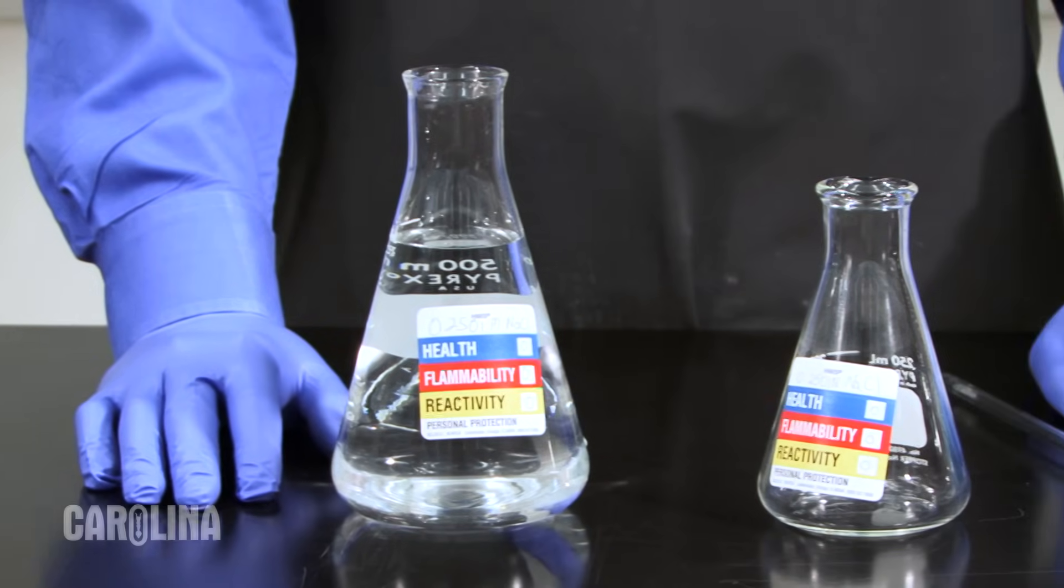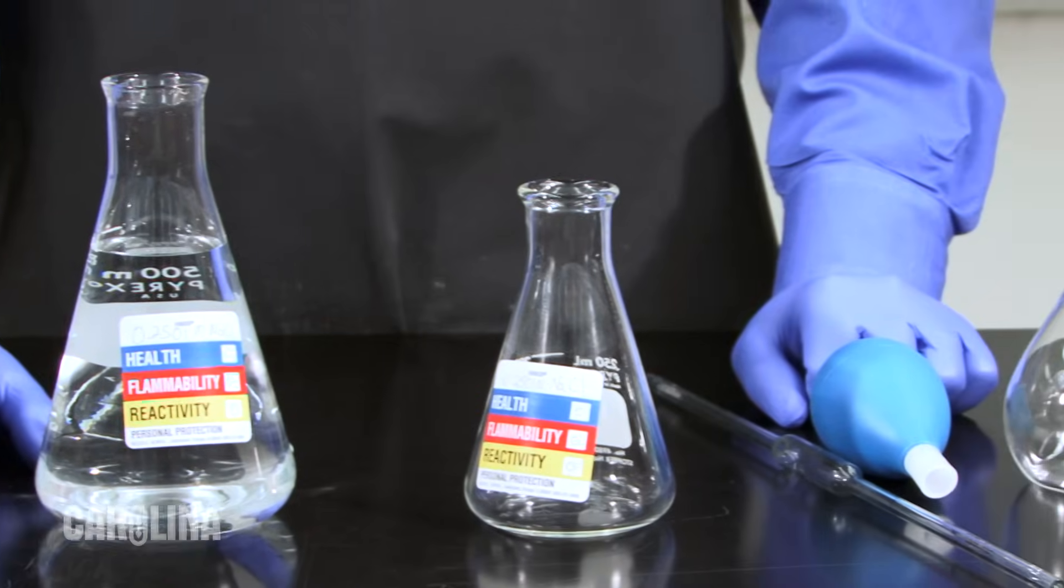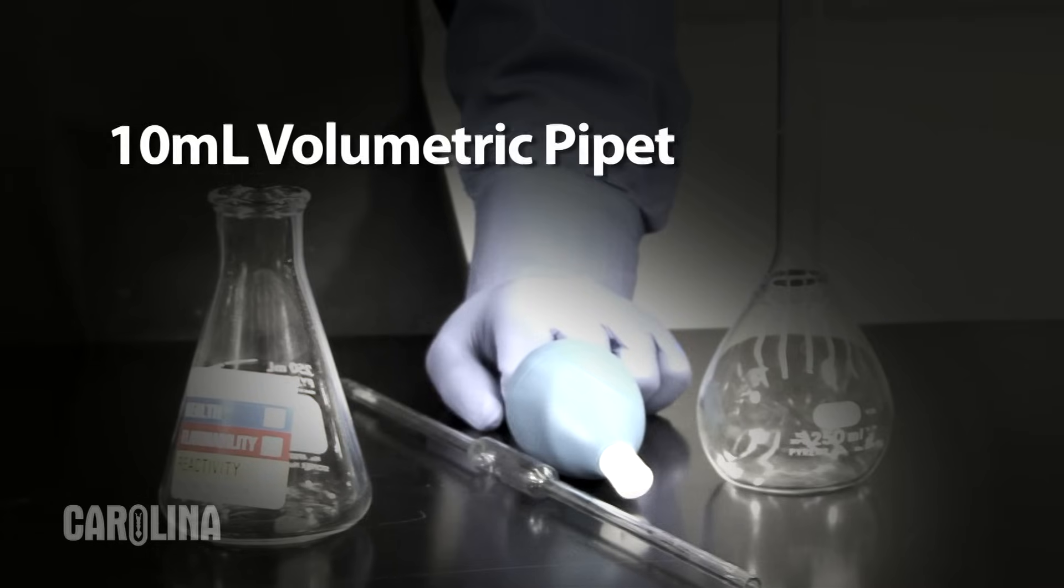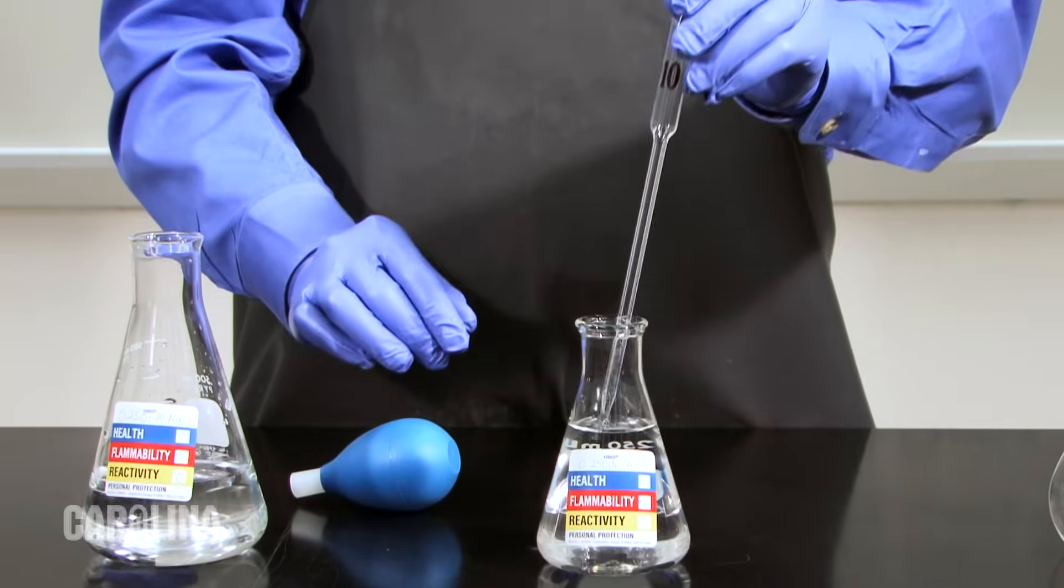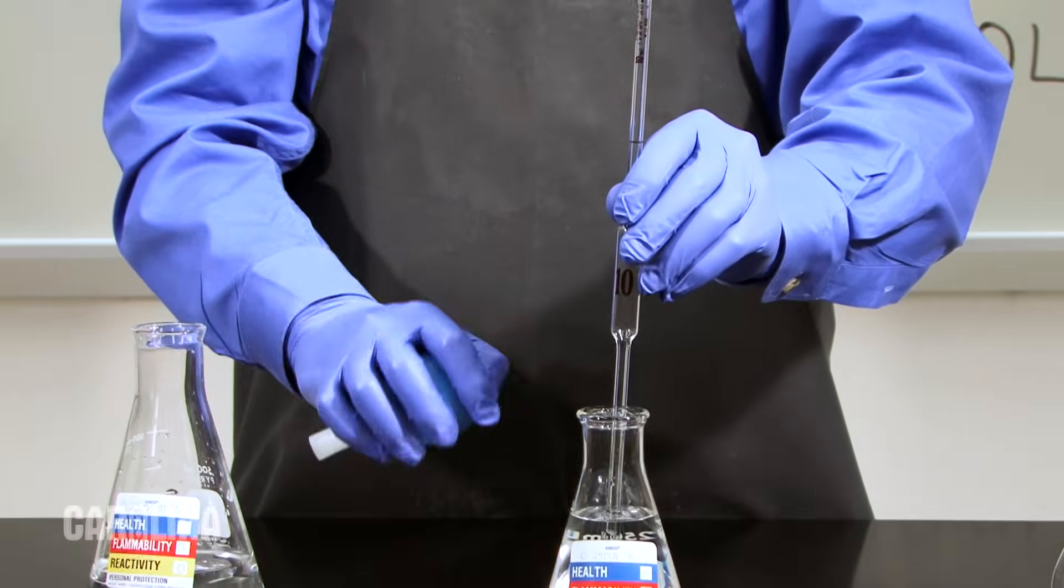To prepare our dilute solution, we will take a 10 milliliter aliquot of our stock solution using a 10 milliliter volumetric pipette. To use the pipette, place the pipette in the liquid to be collected.